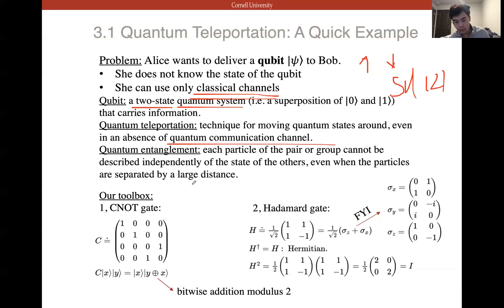Quantum entanglement is when each particle of a pair or group cannot be described independently of the state of the others. If you do something to one particle of the system, the other particle is affected — even if they are separated by a large distance. Our toolbox uses quantum gates. We need two quantum gates: the CNOT gate and the Hadamard gate.